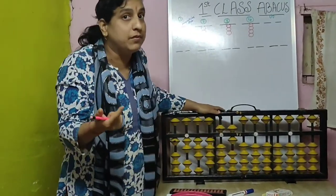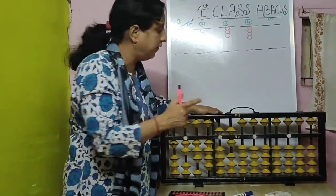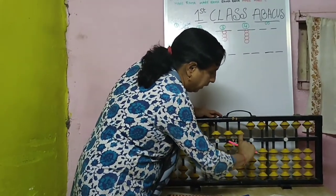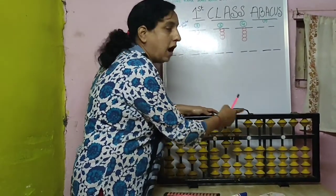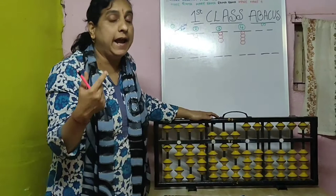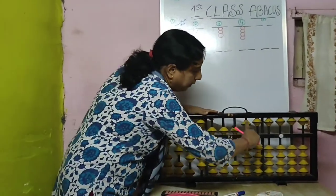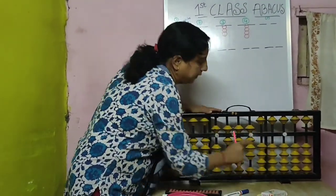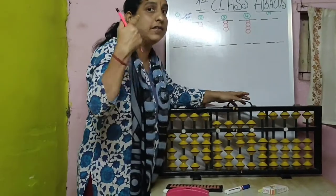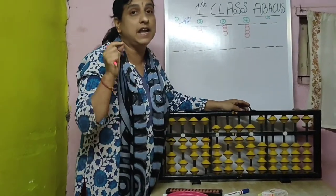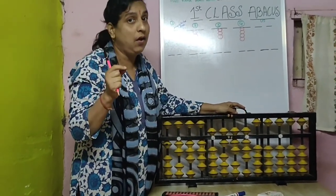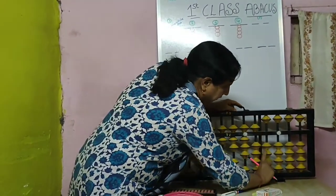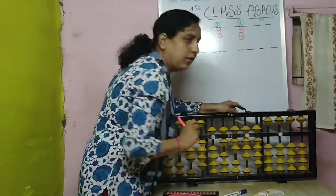After 6, which number will come? 7. 1 upper bead, 2 lower beads. Then after 7 comes 8 — 1 upper bead, 3 lower beads. This is 8. After that 9 — till 9 numbers you people have learnt, isn't it? This is 9.